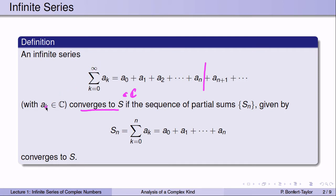These a_k's are complex numbers. You've probably seen infinite series before in the context of real numbers. Now these a_k's are complex numbers, and one can easily see that a series of complex numbers converges if and only if the corresponding series of real parts converges and the corresponding series of imaginary parts converges.